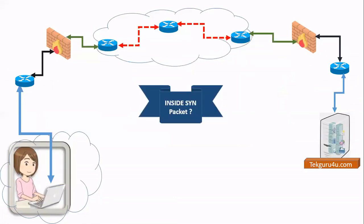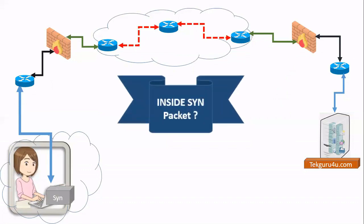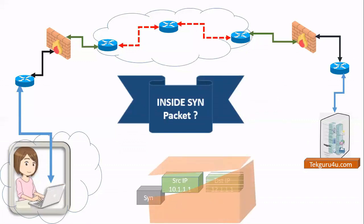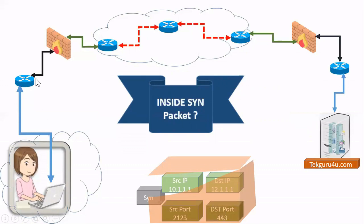Now let's move to the next thing: what goes inside the packet? When your SYN packet goes, you have source IP and destination IP. The source IP is the IP address of your PC; the destination IP was obtained after the DNS query. We were only having the hostname techguru4u.com, so the DNS packet went and we got the destination IP. We also have the source port — generated by the system — and the destination port. When going through a firewall, NAT happens, but our topic is to understand what is 3-way handshake, what goes inside SYN and SYN-ACK.